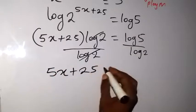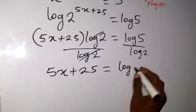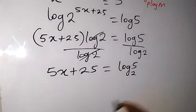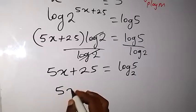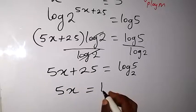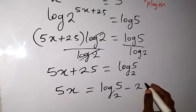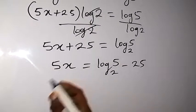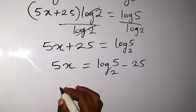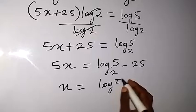Then what we have left on this side is now 5x plus 25, which is equal to - on this side we can also write this as log 5 base 2. Also from the laws of logarithm, we can take plus 25 there to become minus. So we now have 5x equals to log 5 base 2 minus 25. And from there when we divide both sides by 5, we say x will be equals to log 5 base 2.